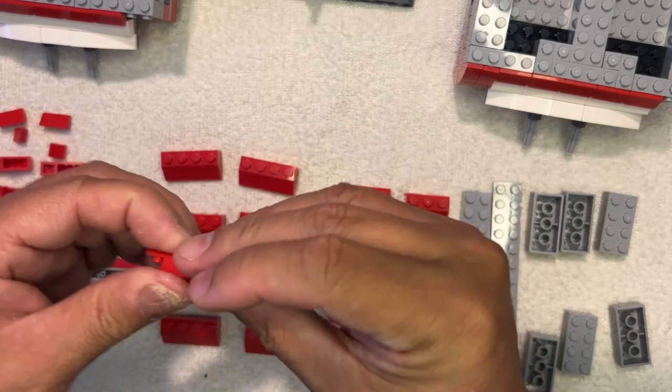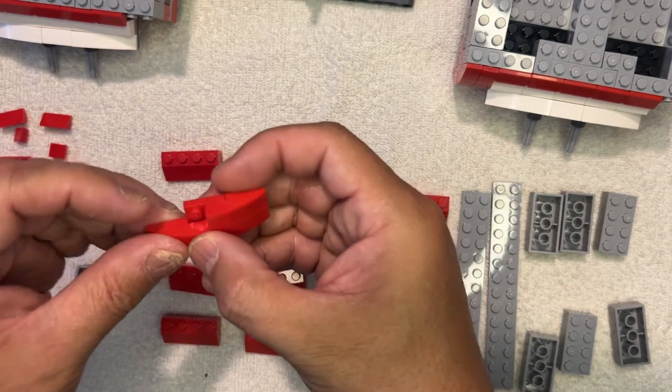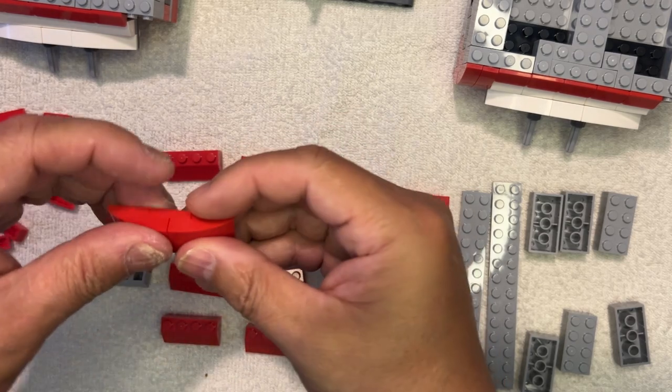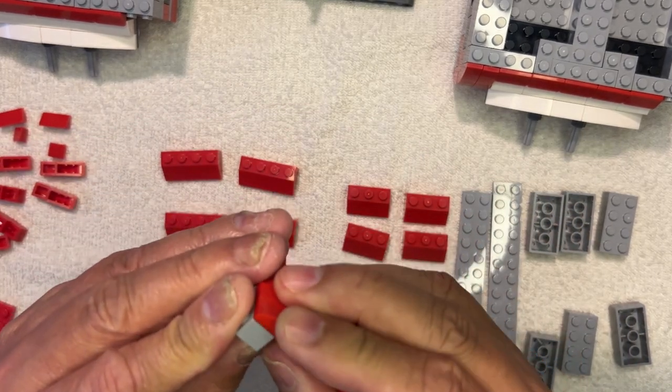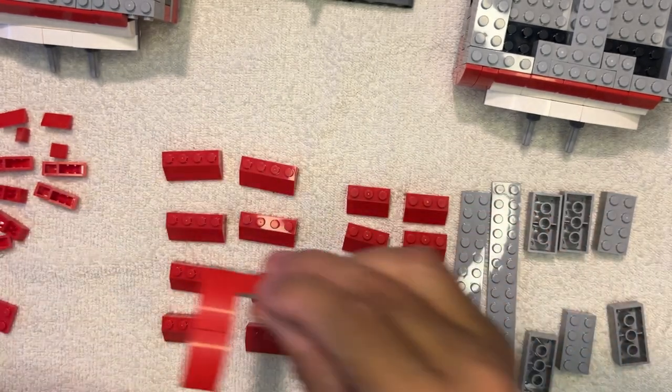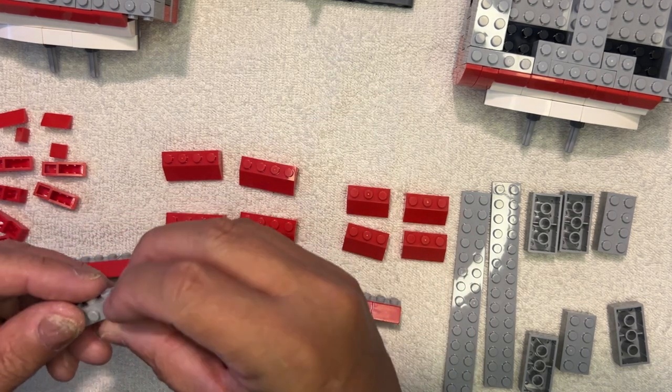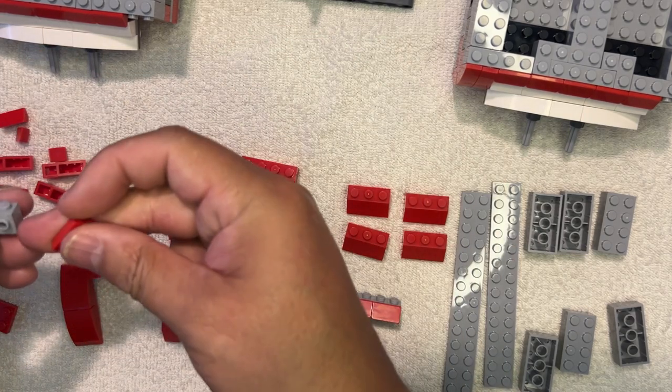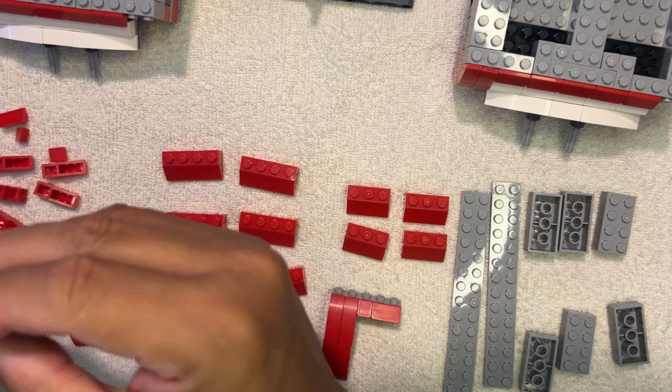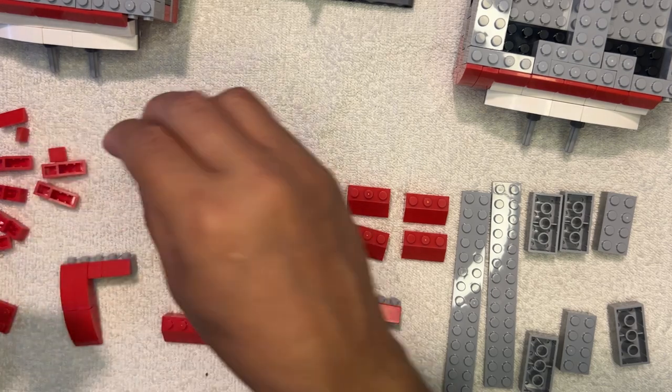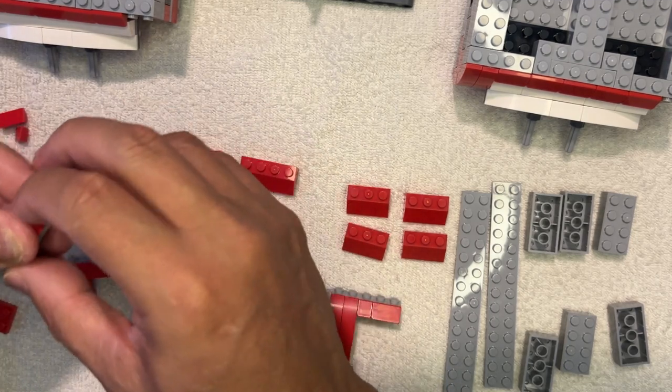Put that like that, like that. There you go, that's one part of it, another one part of this. Okay, then we're gonna take these and build this part of it. Like this, like this, like this, and like that. And again, I'll take this and put it right here just like that. Remember, I'm going to build four of these.